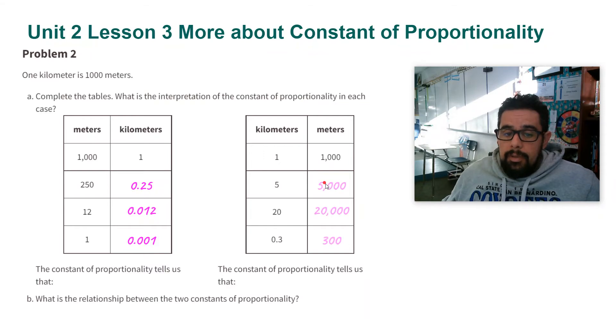So 5 kilometers is going to be 5,000 meters. 20 gives me 20,000, and three-tenths gives me 300.